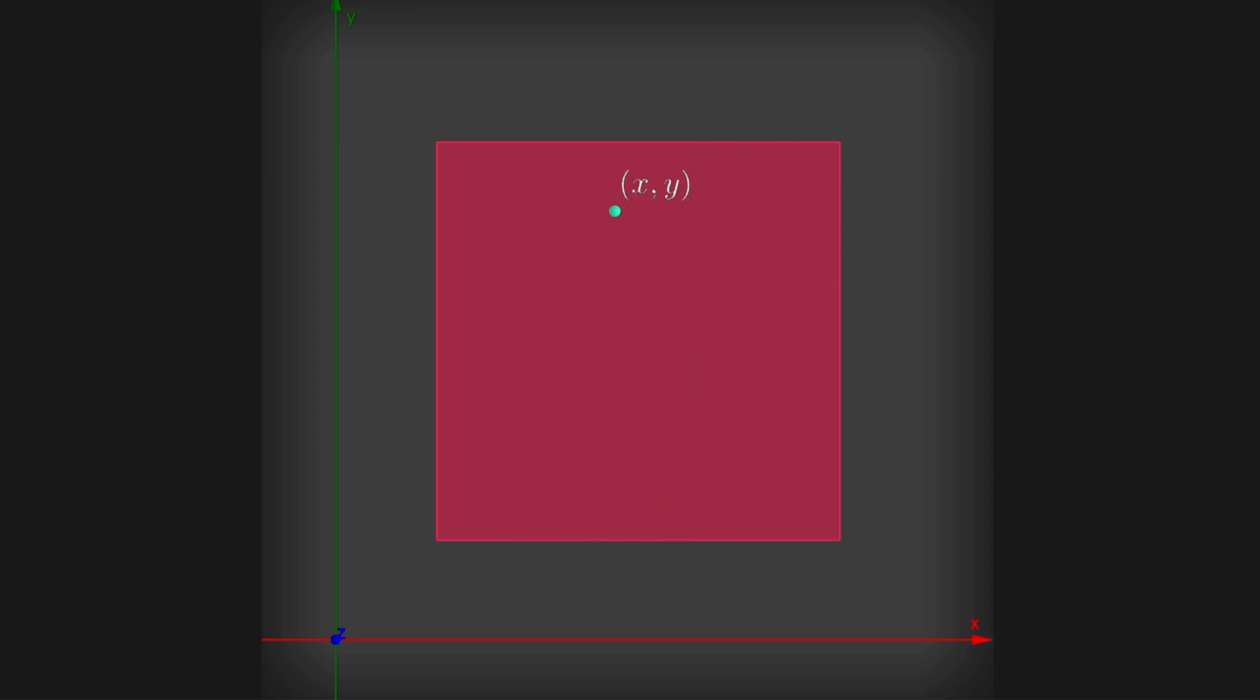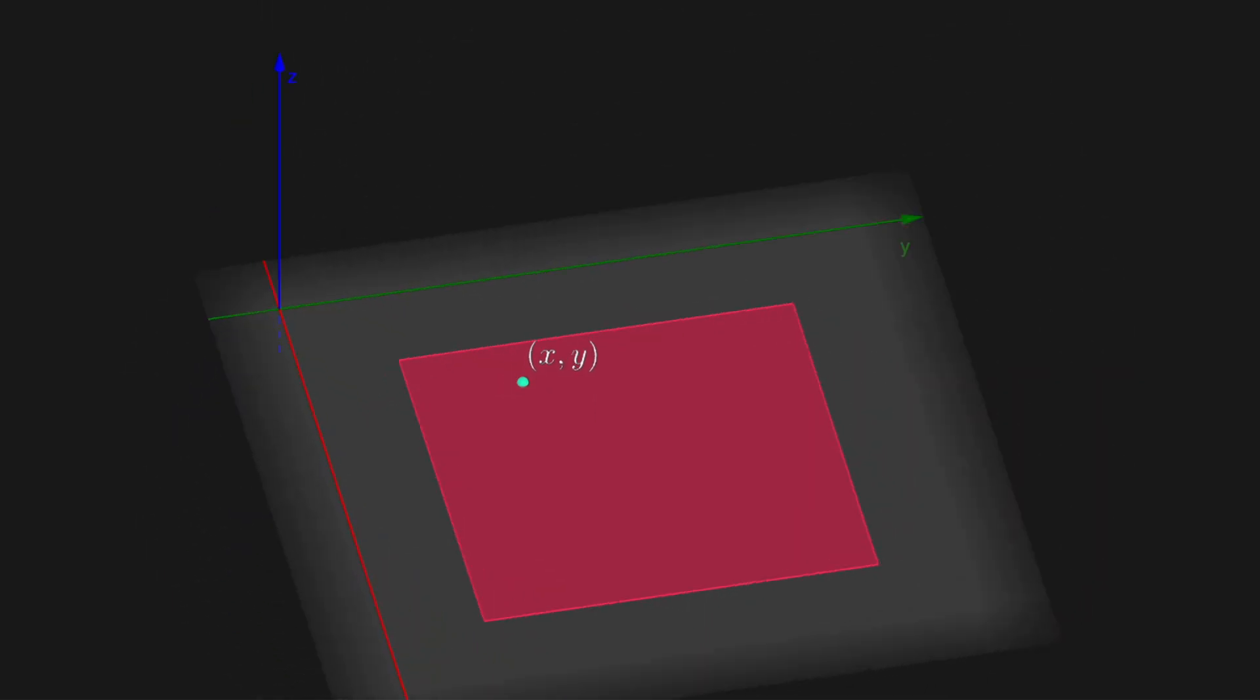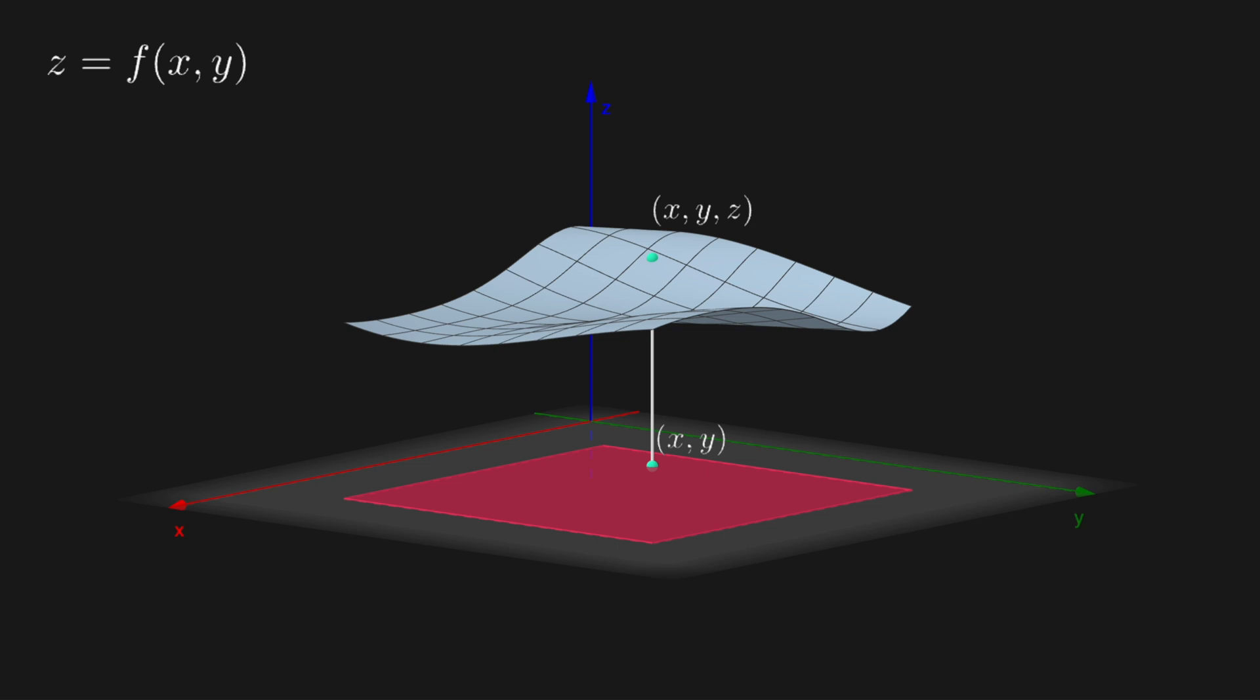For any point x comma y in the domain, we define the point in the space x y z, where z is equal to f evaluated at x comma y. So we obtain the graph of the two real variables function. The graph of a function of two variables is called a surface.